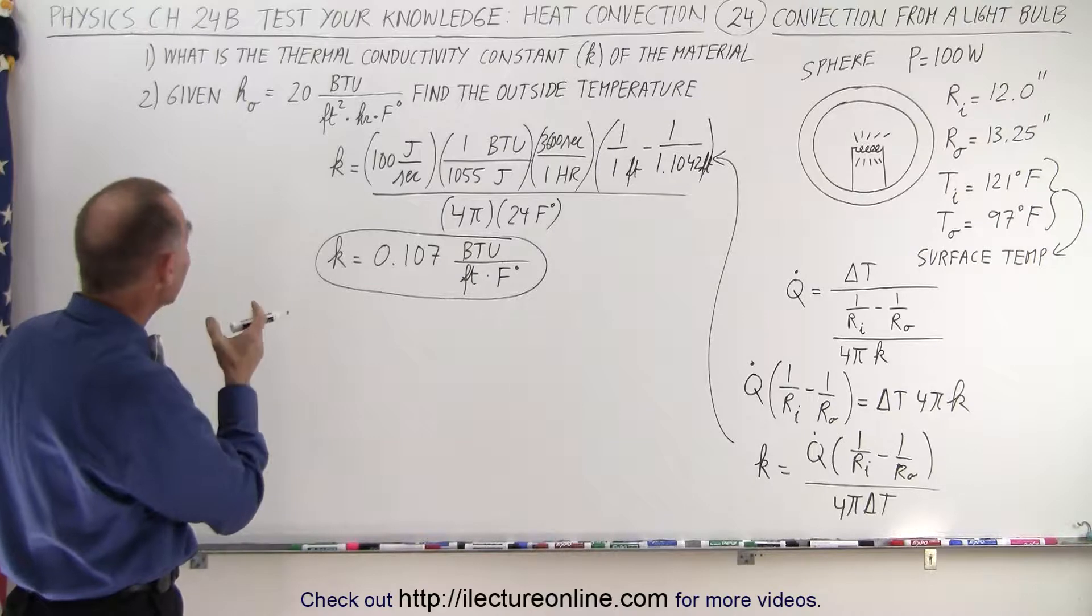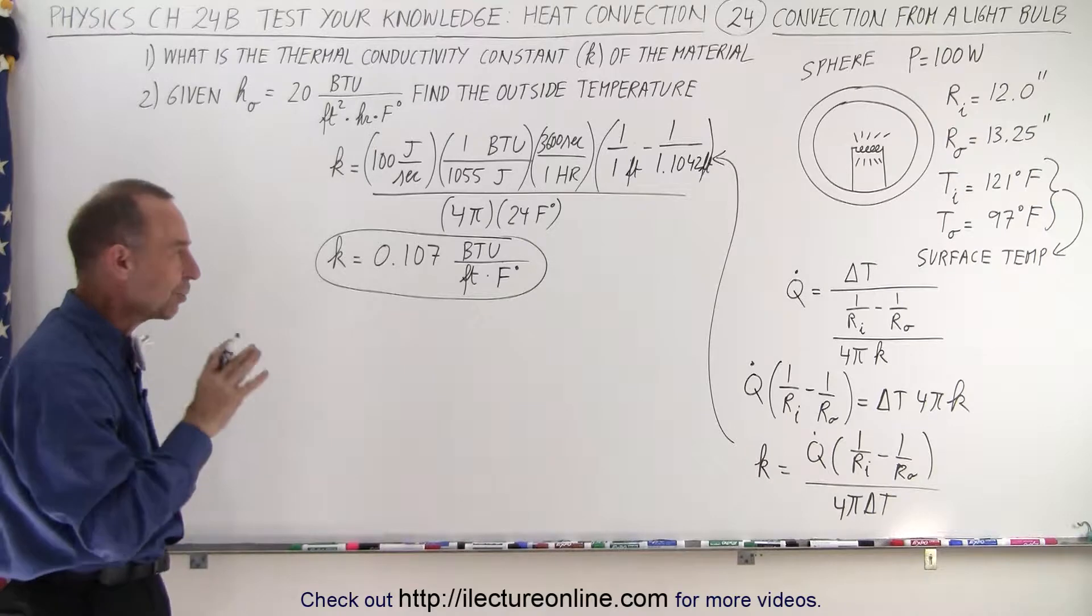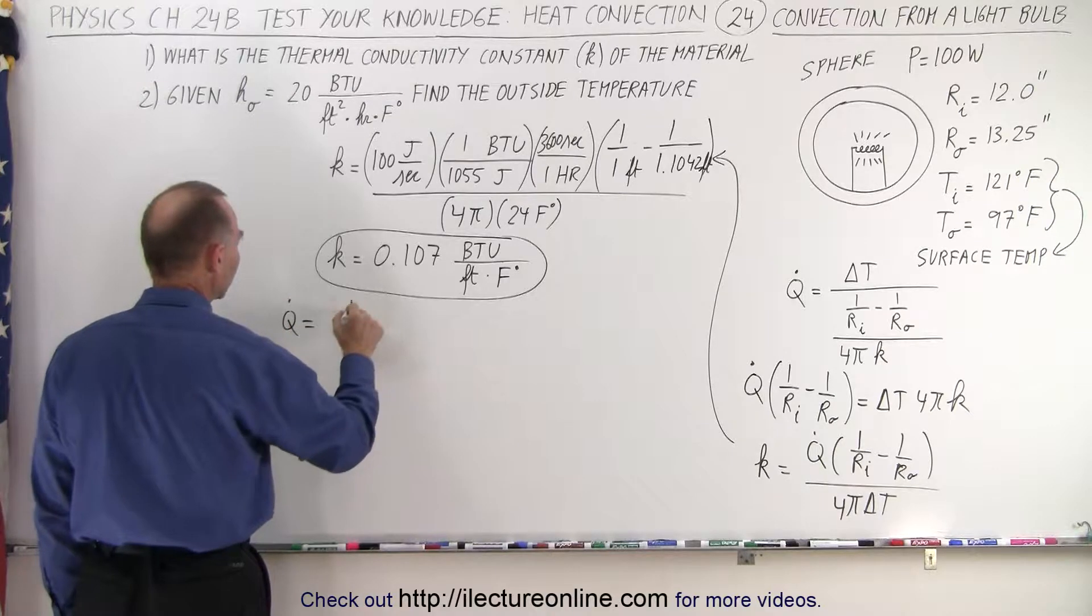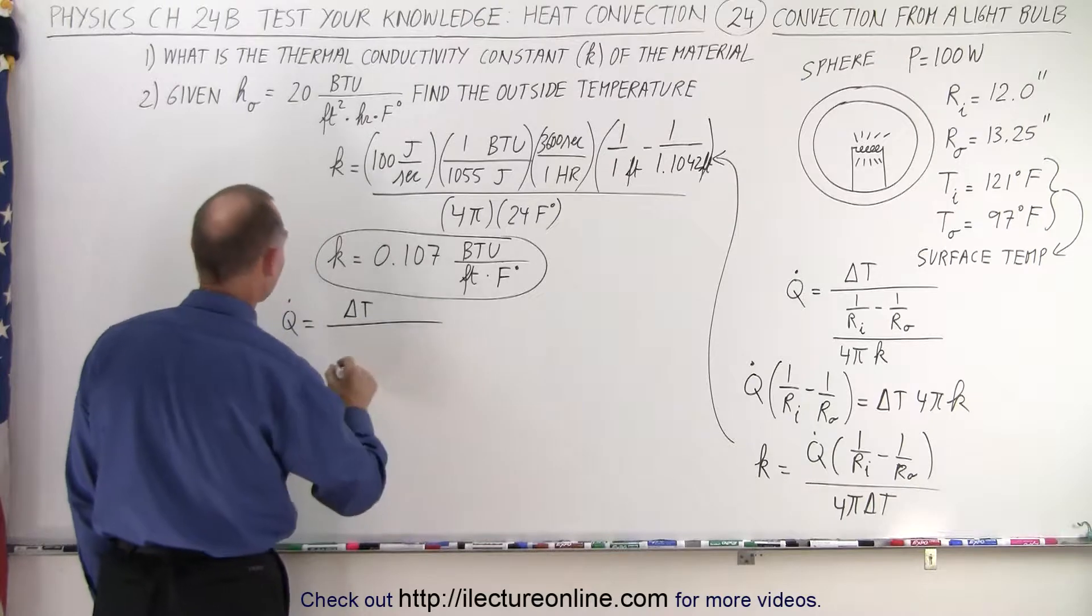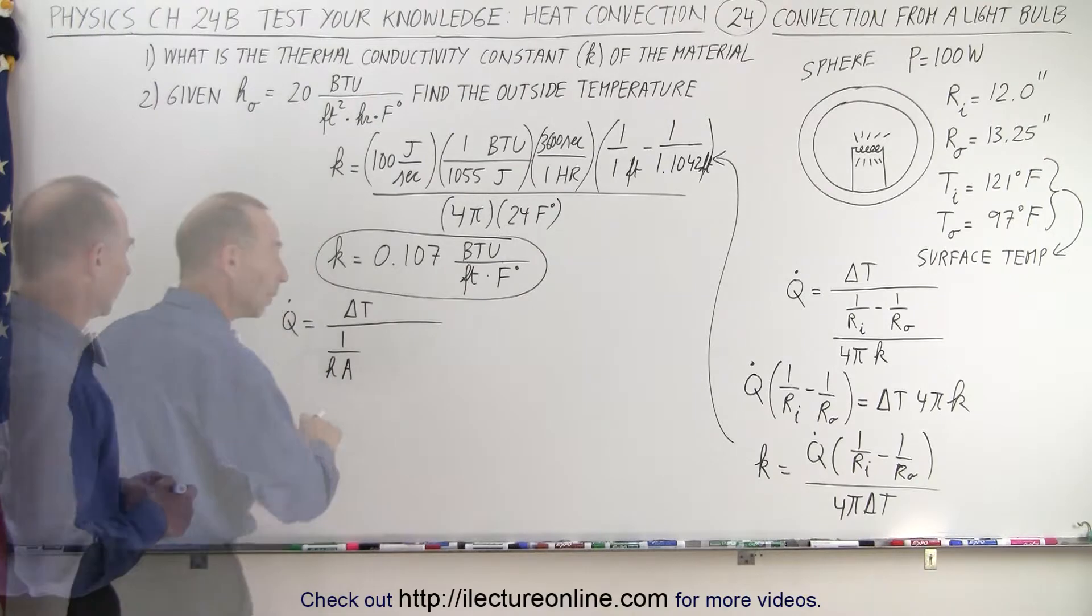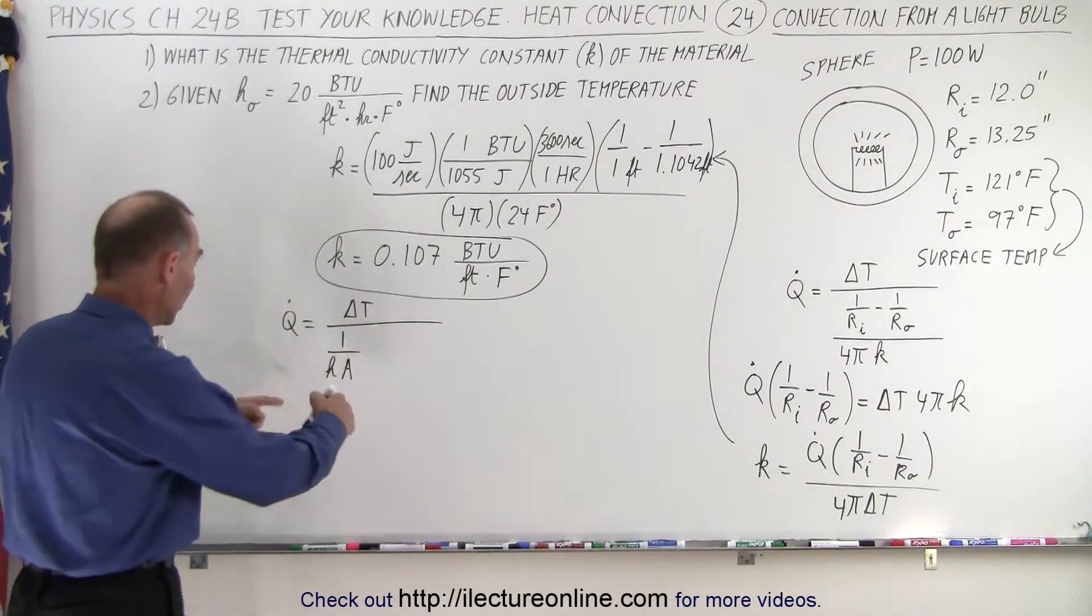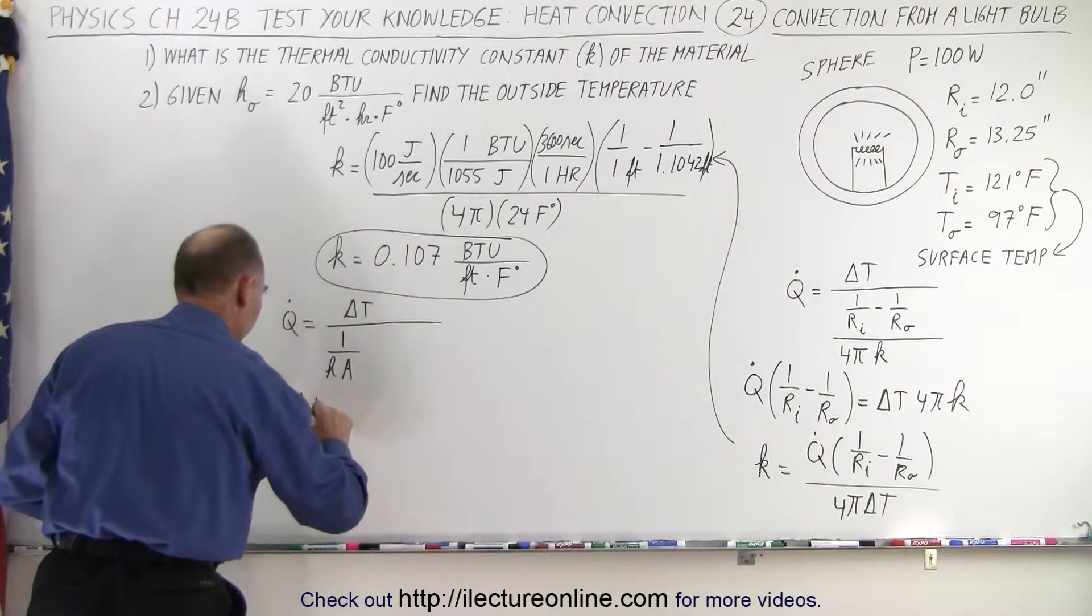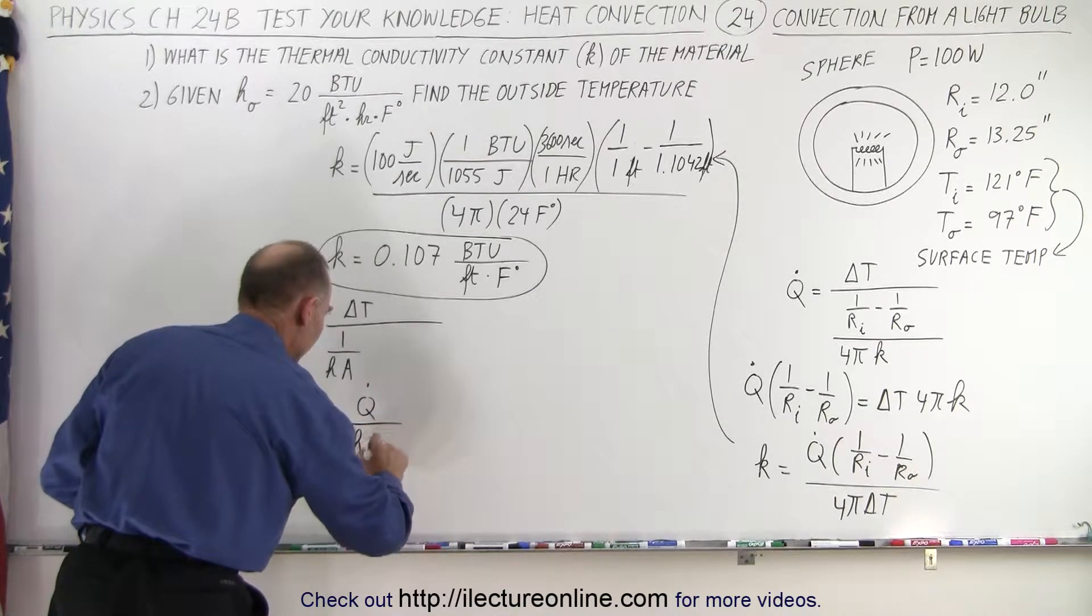Next, we need to, let's see, given that, find the outside temperature. So now we have to go back to the following. We have to say that Q dot is going to be equal to the difference in temperature from the outside to the inside, divided by 1 over H times the area. Now solving that for delta T, then what we need to do is bring HA to the numerator, switch the equation around, and then we end up with delta T is equal to Q dot divided by H times A.